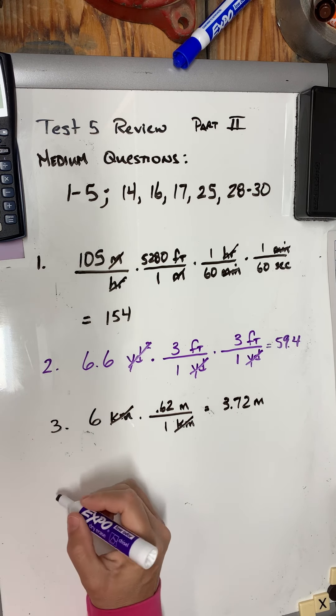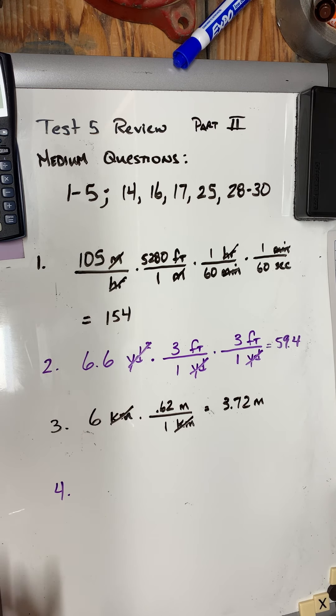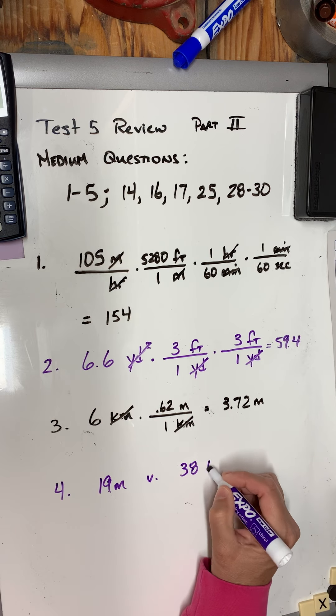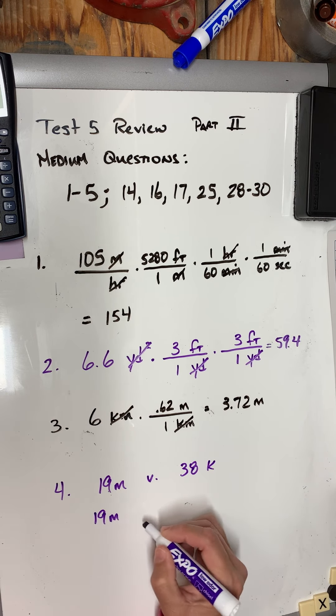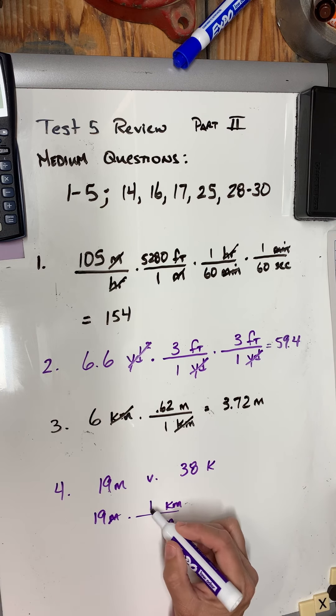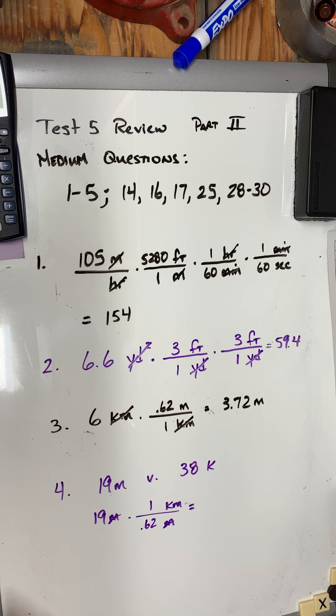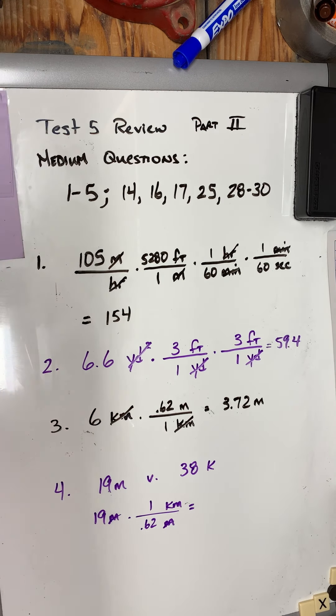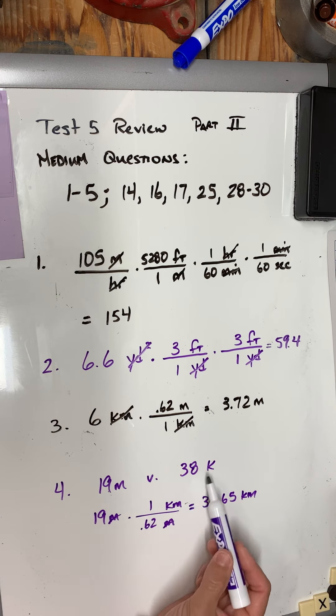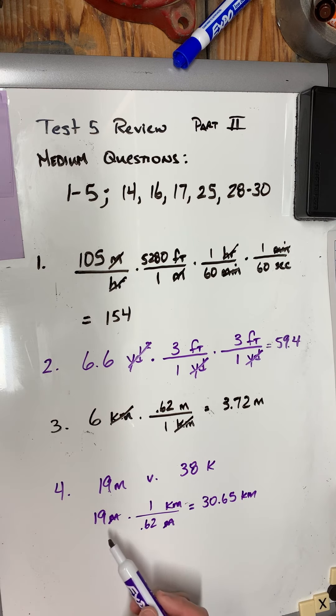Okay, let's look at number four. Four says which distance—19 miles or 38 kilometers—is greater? So 19 miles versus 38 kilometers. Let me just convert miles to kilometers. So I'm going to cancel miles by making it in the bottom, and the previous question they told me that one kilometer is 0.62 miles. So if I do 19 divided by 0.62, let's see what I get. I get 30.65, and those are kilometers. So the 38 kilometers was bigger, and then I need to in the answer give them that 19 miles converted to 30.65.